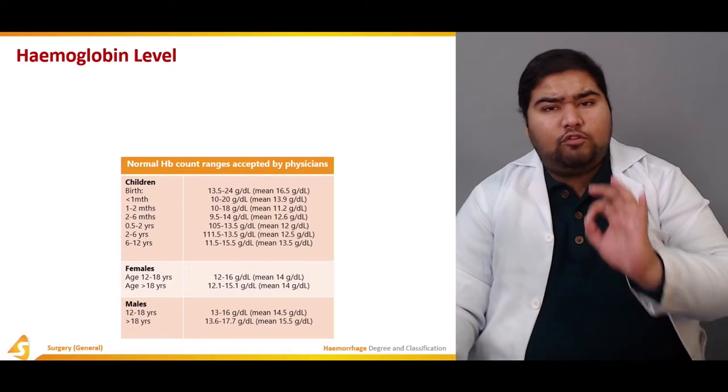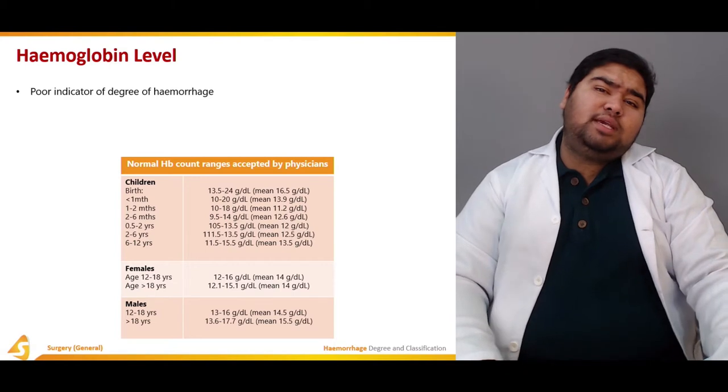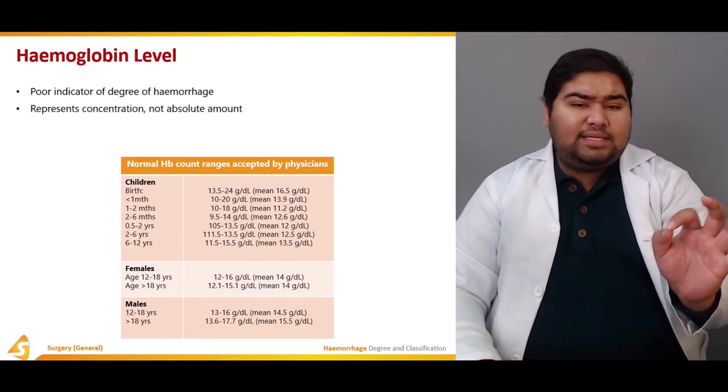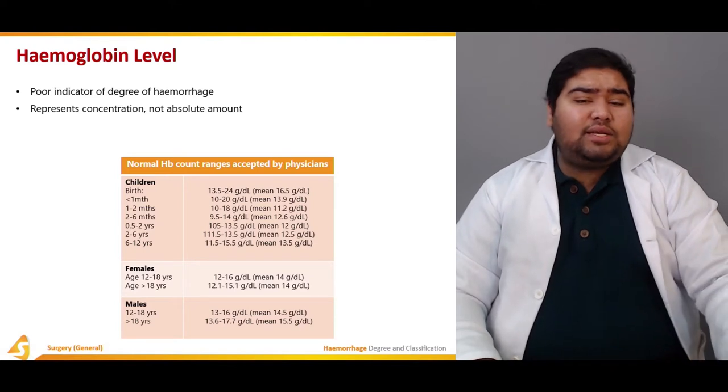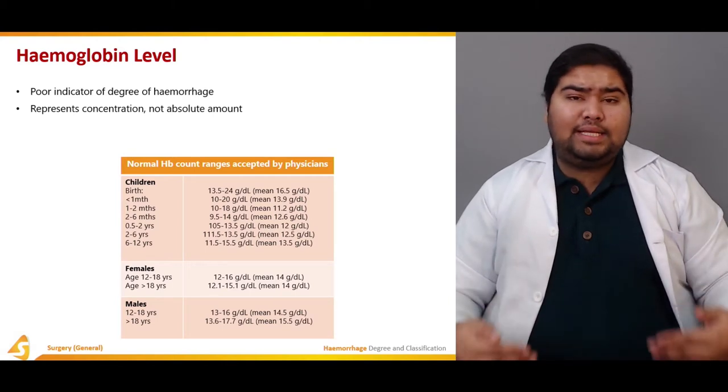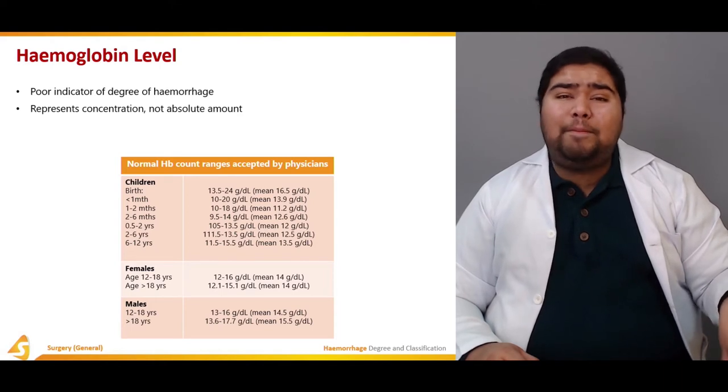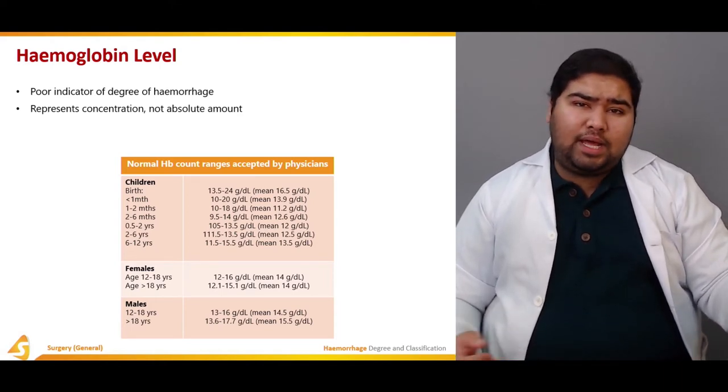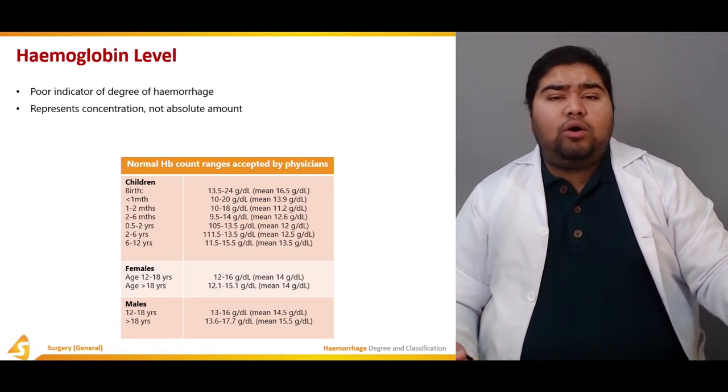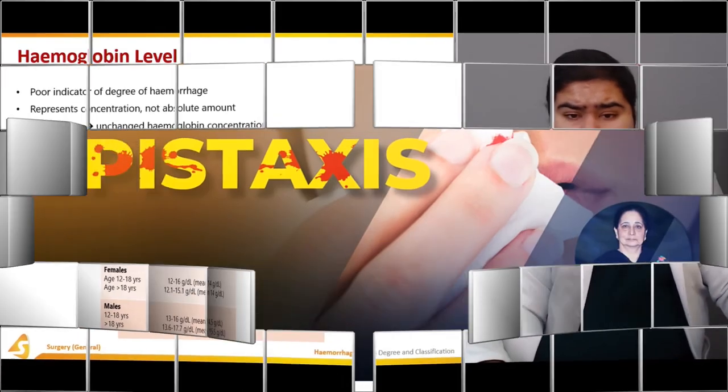It is actually a poor indicator of the degree of hemorrhage. Why is that? Because it represents the concentration, not the absolute amount. This is the concentration of hemoglobin in the blood, not the amount of hemoglobin in the blood. So hemoglobin level cannot be used as an indicator for hemorrhage.